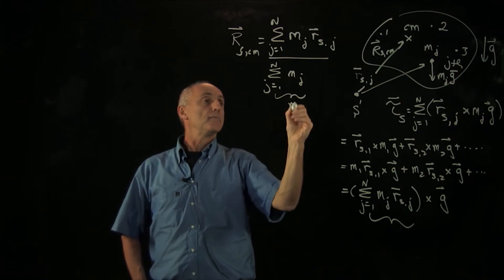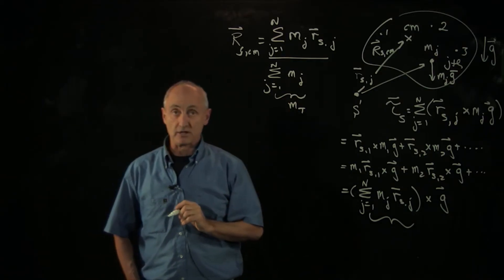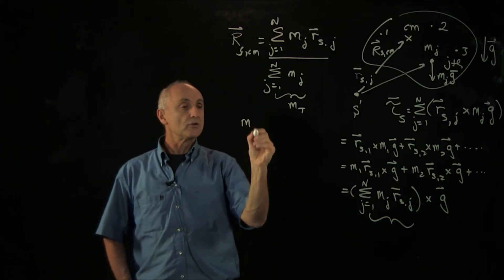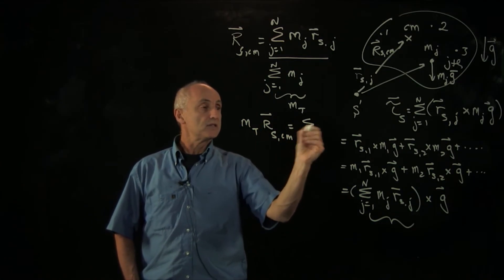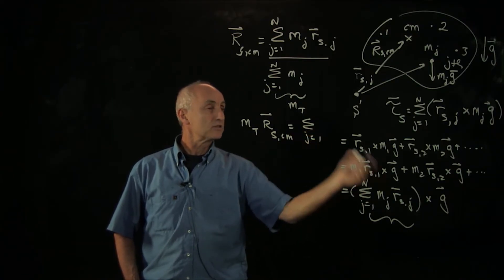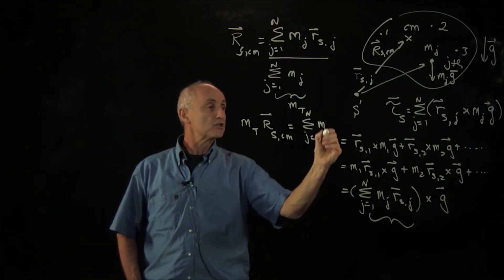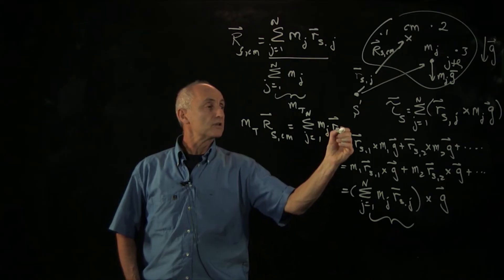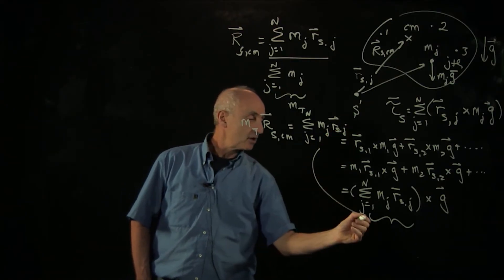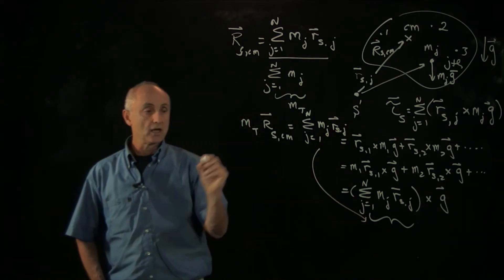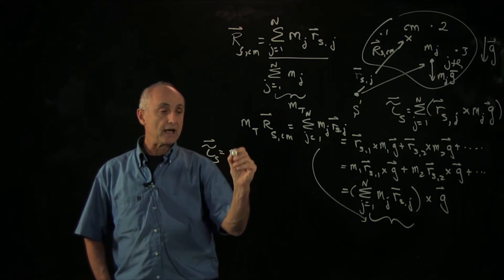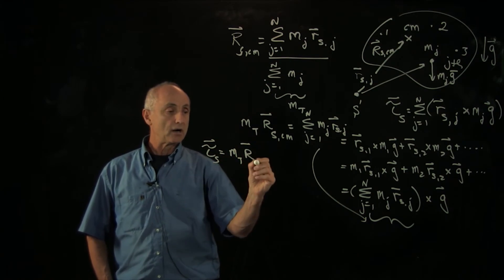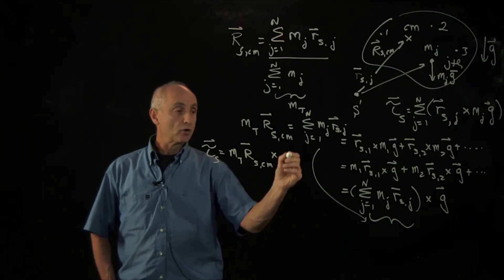We'll denote this term by m total for the total mass. So what we see here is the total mass times rscm is equal to exactly the sum that we have in that expression, mj rsj. That's precisely that term. And so we can conclude that the torque about the center of mass is m total rscm cross g.